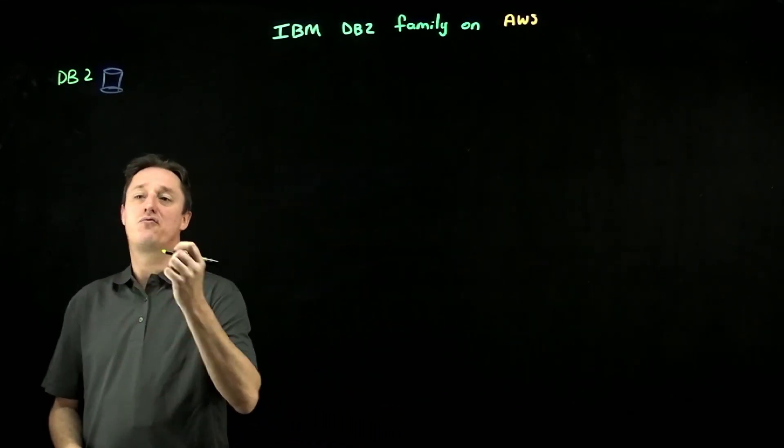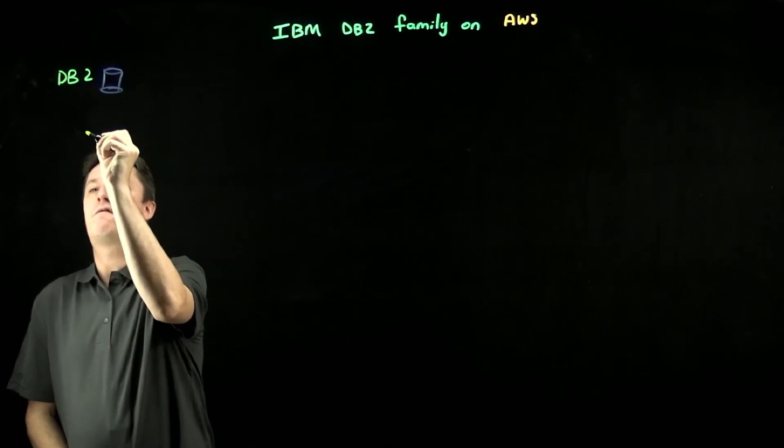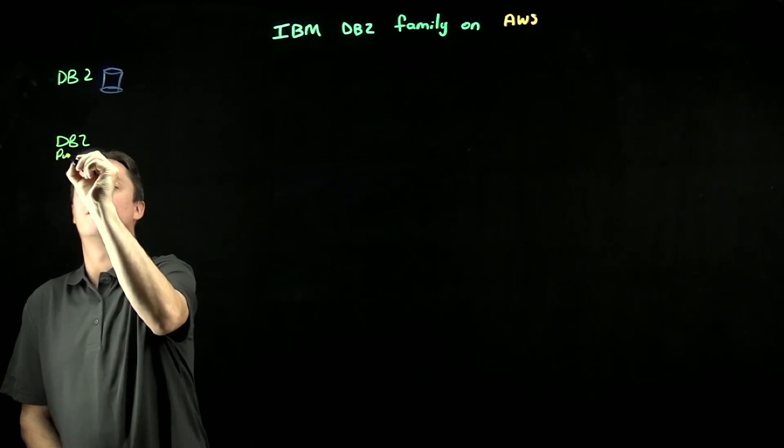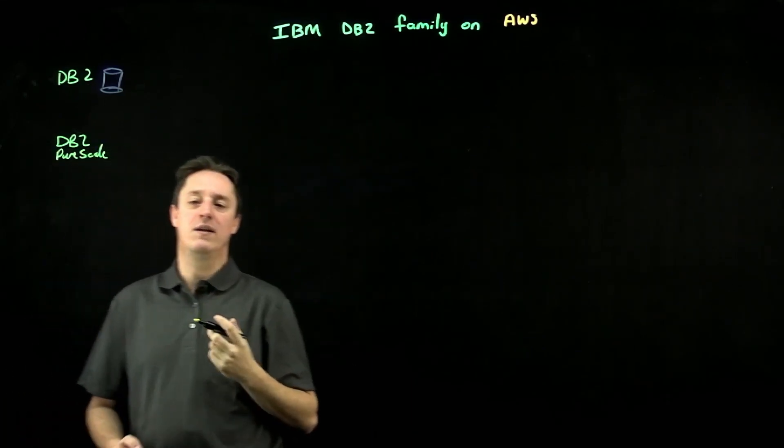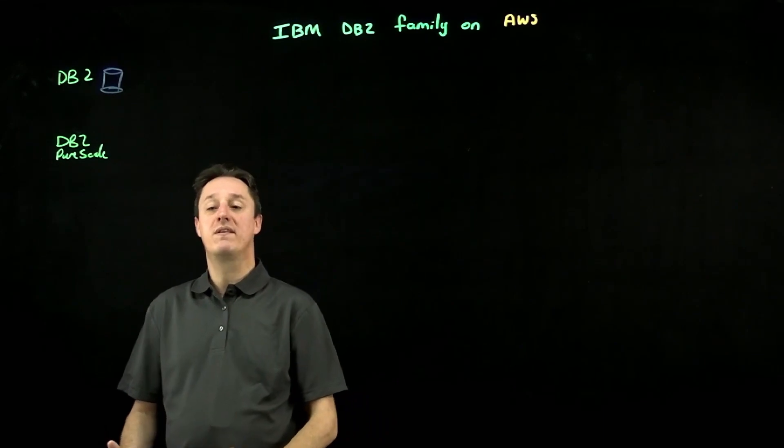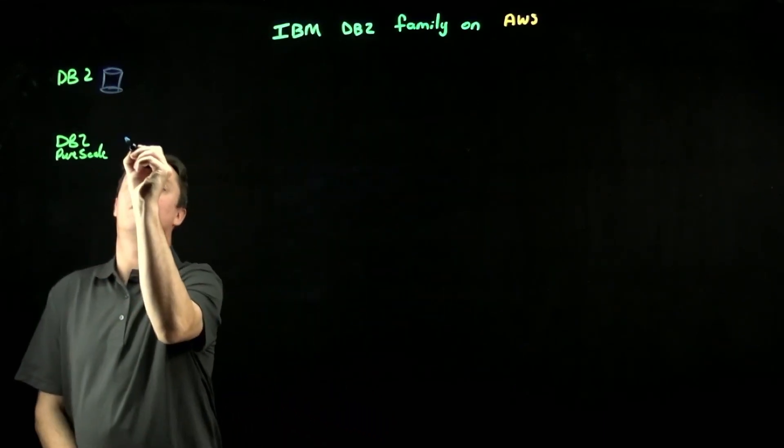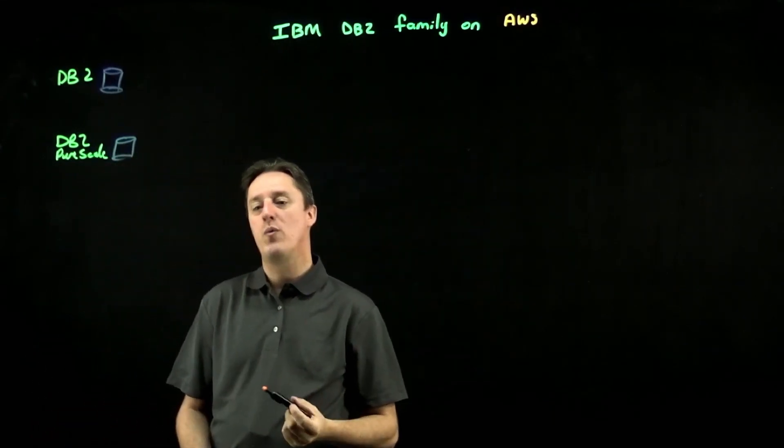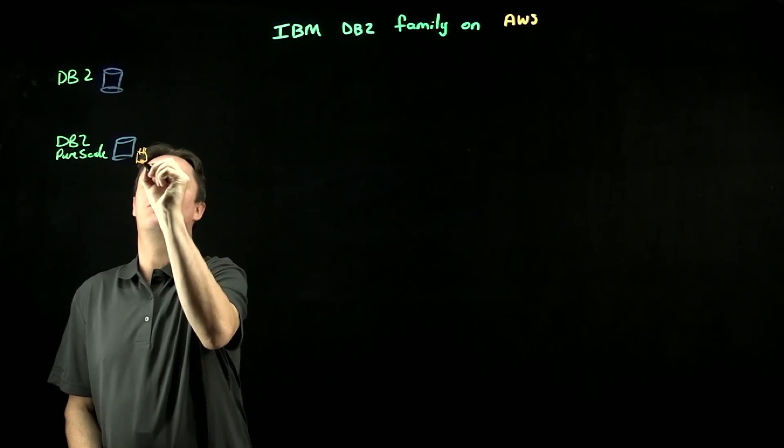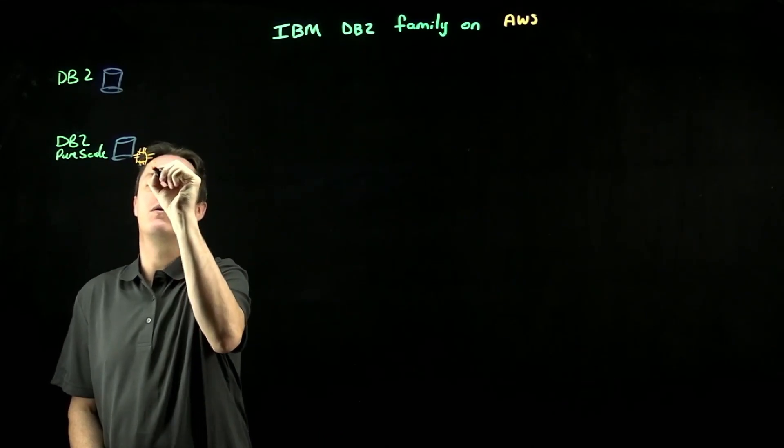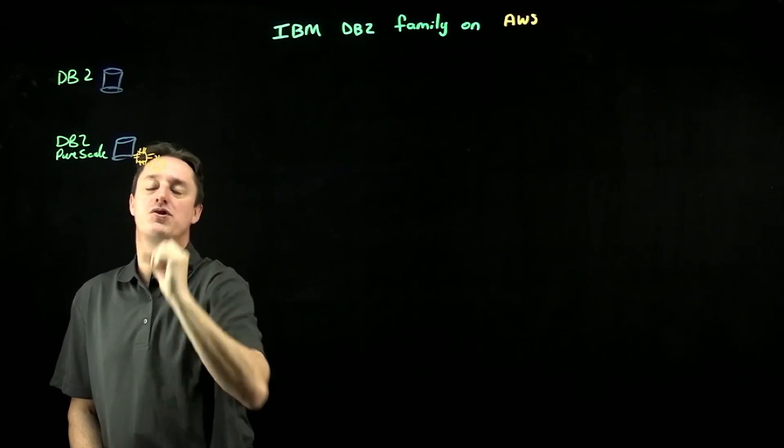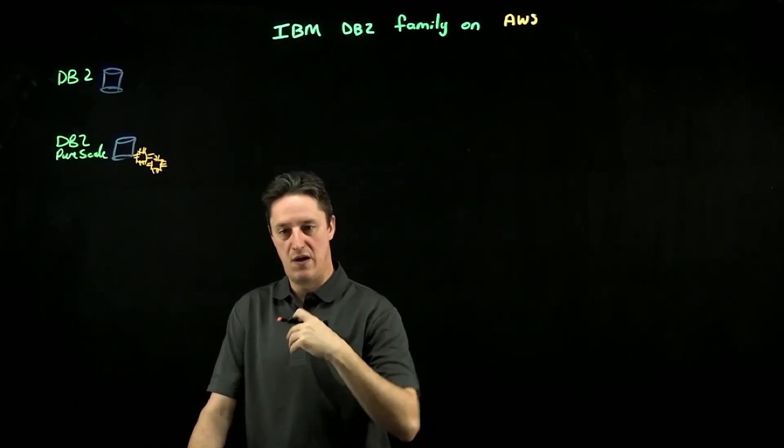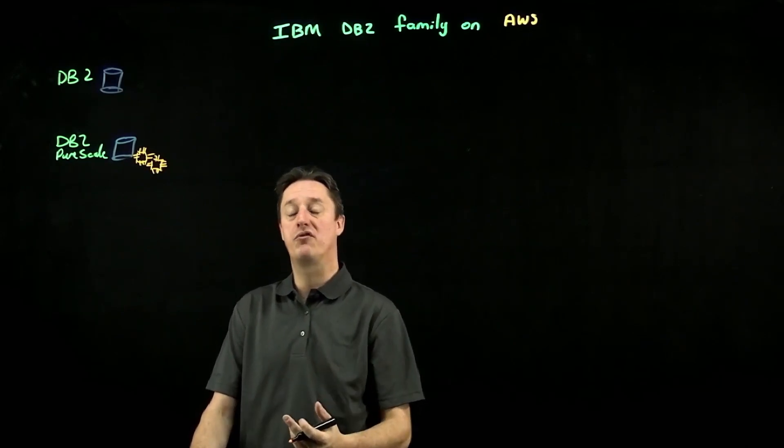To that effect, I want to draw your attention to two products, and the first is IBM's DB2 PureScale. PureScale is simply another implementation of DB2—it is IBM's DB2 relational database, but under the hood what we've done is deployed that into a clustered compute configuration. This will sit on top of multiple AWS EC2 instances in a highly available, highly resilient, high-performance architecture.